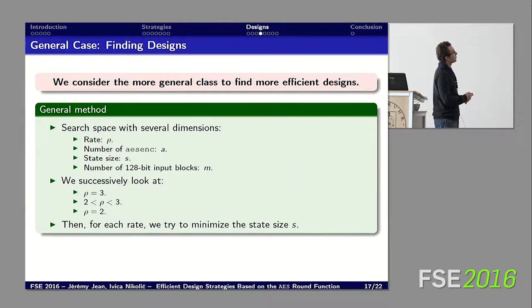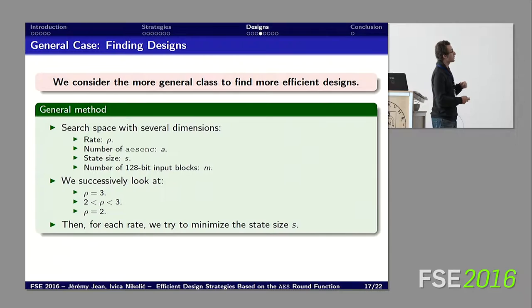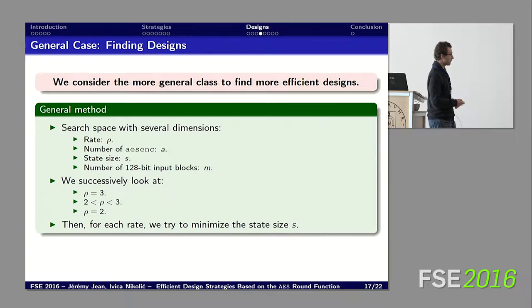To achieve greater efficiency, we move to the more general class. The search space has several dimensions: the rate, the number of AES round function calls, the state size, and the number of blocks injected into the state. We successively examine rate 3, rates between 2 and 3, and rate 2, trying in each case to minimize the state size to get as small a construction as possible.